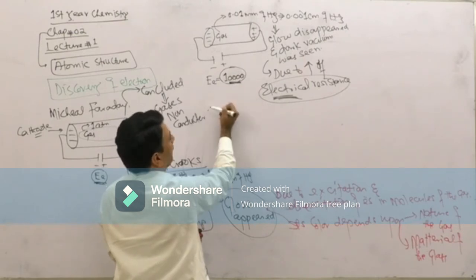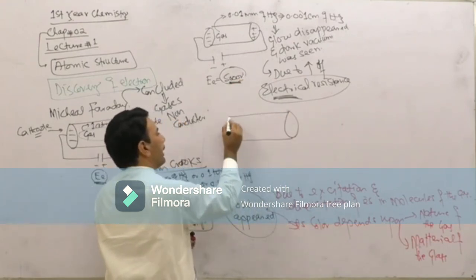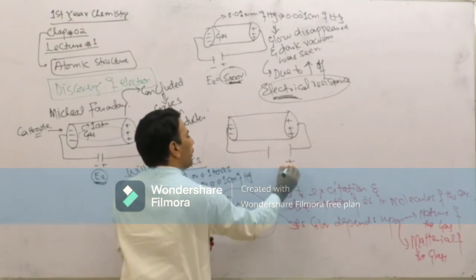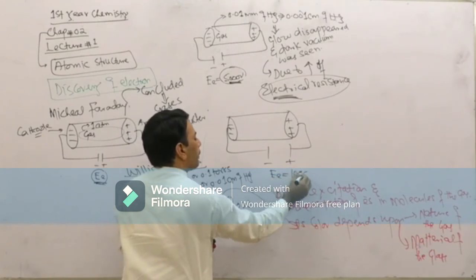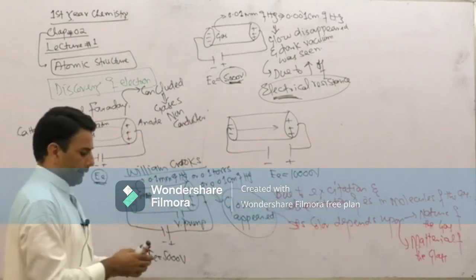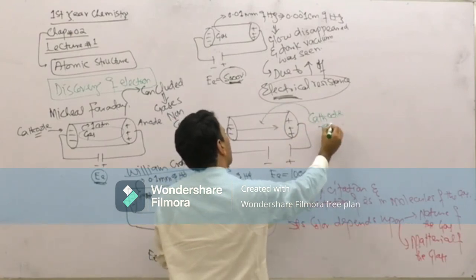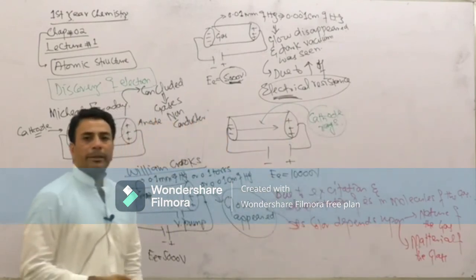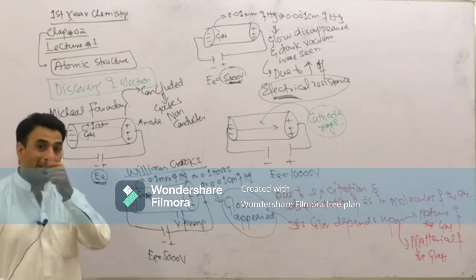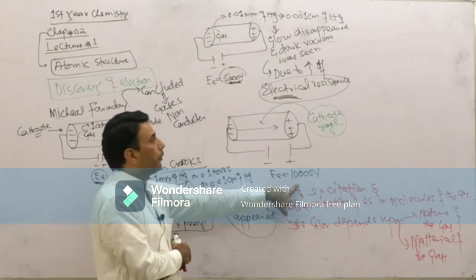When the potential difference was increased to 10,000 volts, some clear rays were seen moving from the cathode towards the anode. These rays were given the name cathode rays, because initially it was thought that cathode rays originate from the cathode. Later it was found that cathode rays actually originate from the gas after the ionization of the gas molecules.